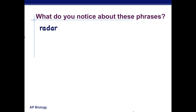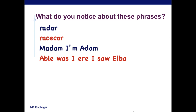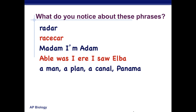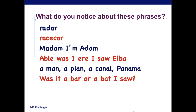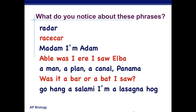What do you notice about these phrases? We've got radar, race car, madam, I am Adam, was I ere I saw Elba, a man a plan a canal Panama, was it a bar or a bat I saw, go hang a salami I am a lasagna hog. These are all palindromes — they read the same forwards as they would backwards.